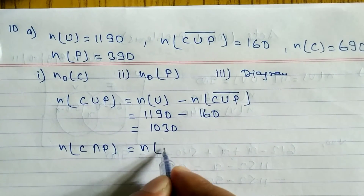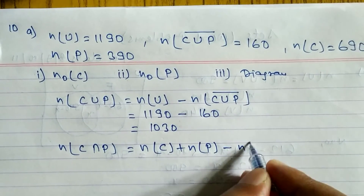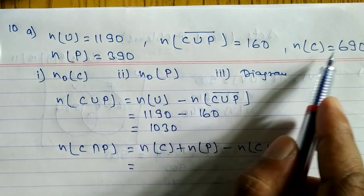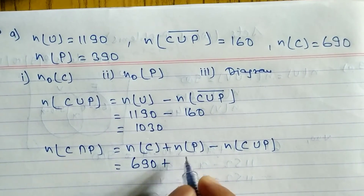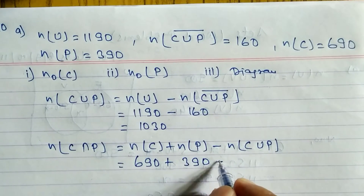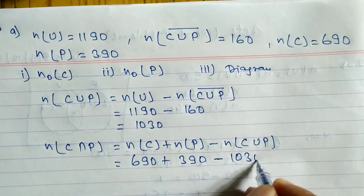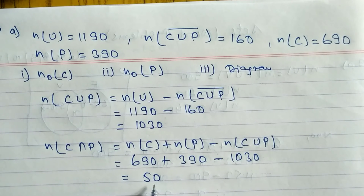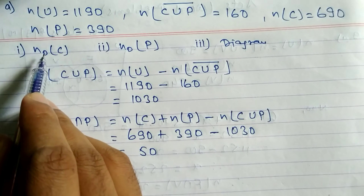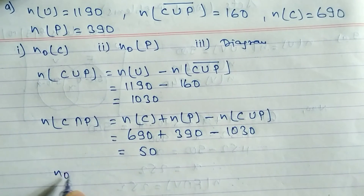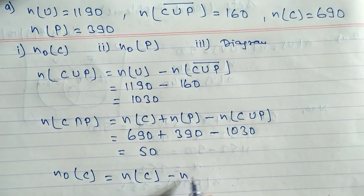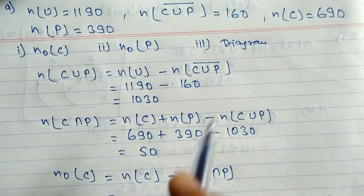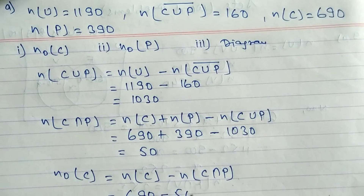Now finding intersection: N(C intersection P) equals N(C) plus N(P) minus N(C union P) equals 690 plus 390 minus 1030 equals 50. So 50 people like both Coke and Pepsi. Now, Coke only: N(only C) equals N(C) minus N(C intersection P) equals 690 minus 50 equals 640.